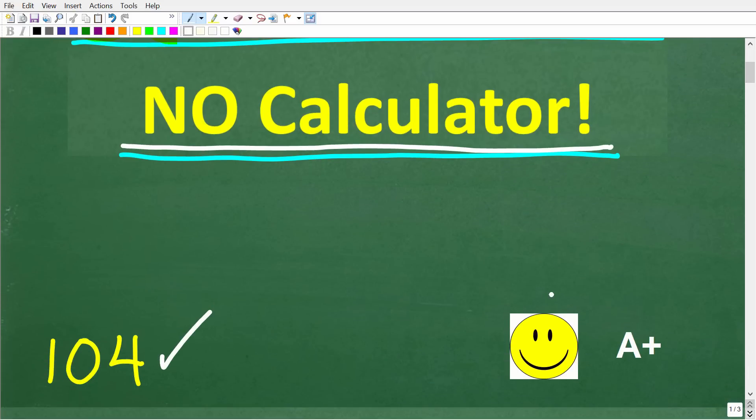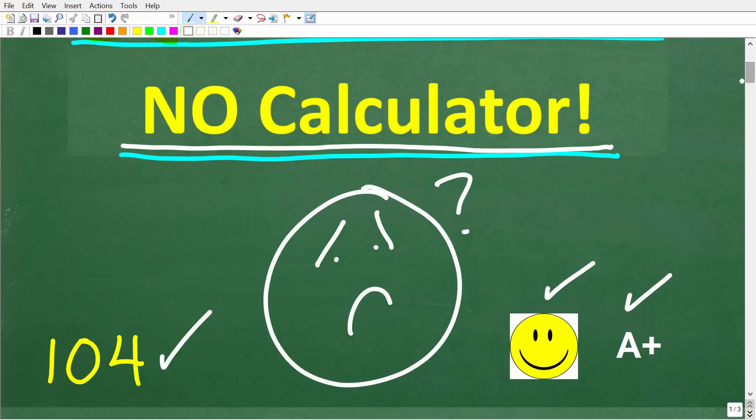The correct answer here is 104. Now, if you got this right, well, you definitely get a happy face and an A plus. You're like, hey, must you too, math man? I got this wrong. I must be so bad in math.